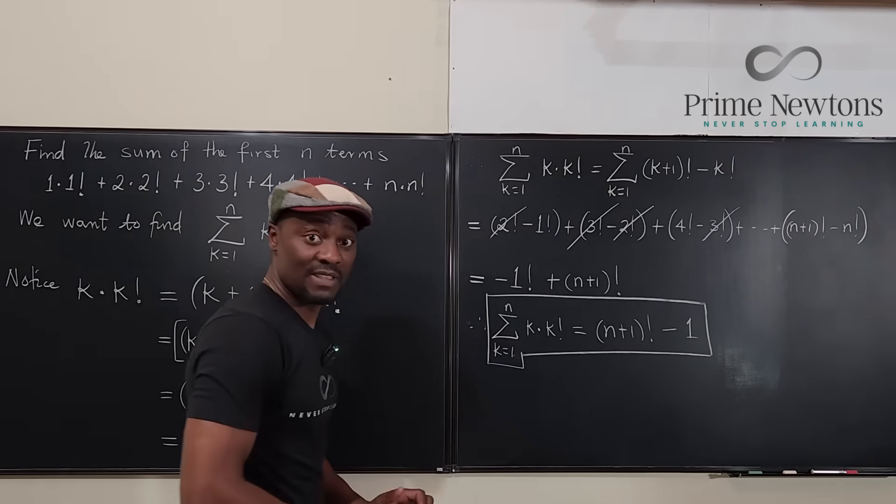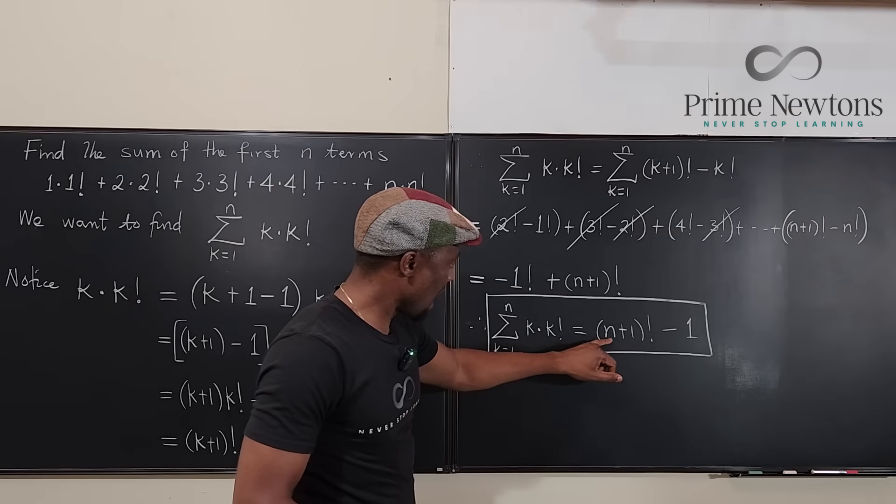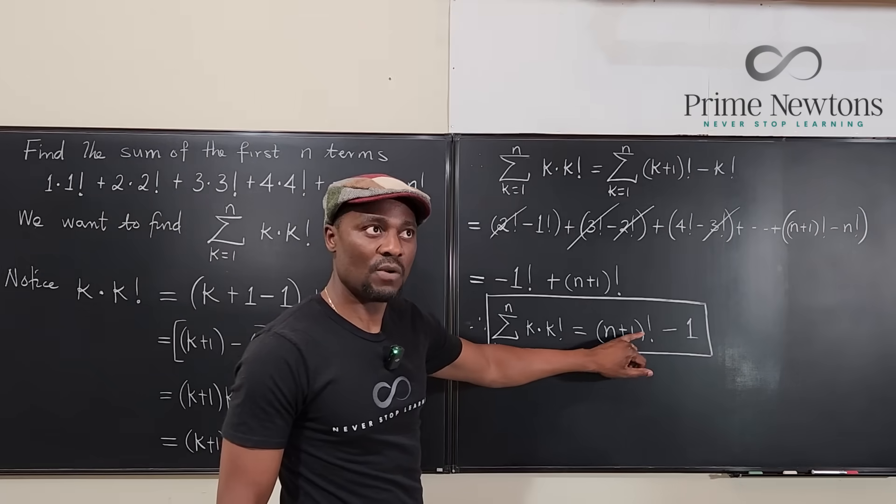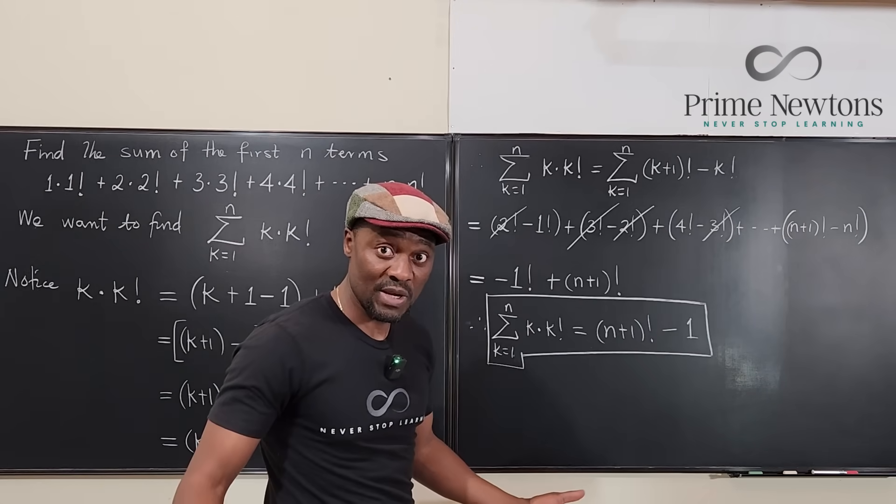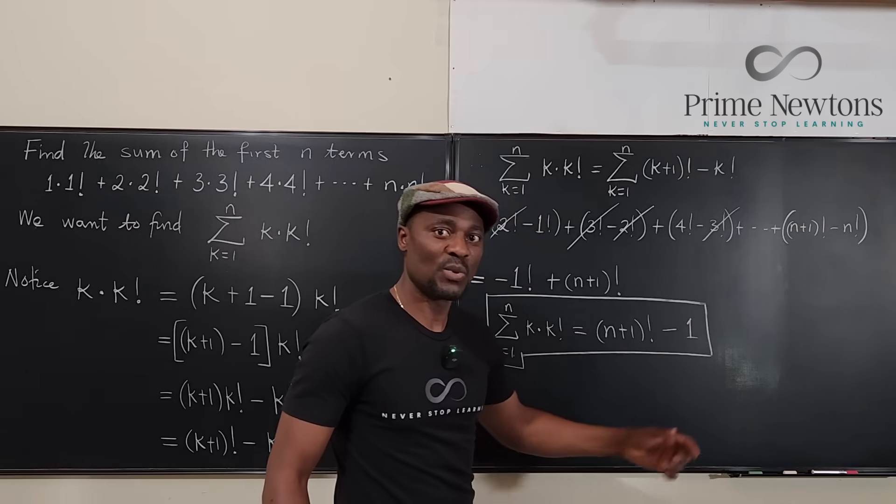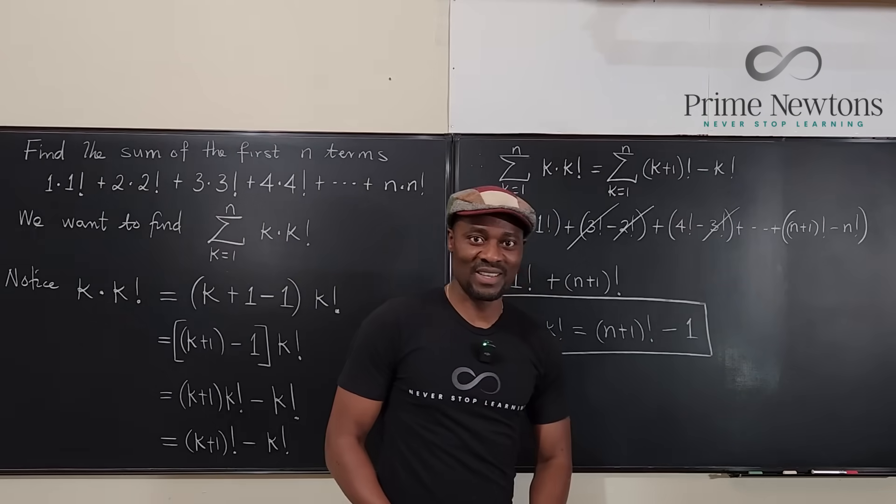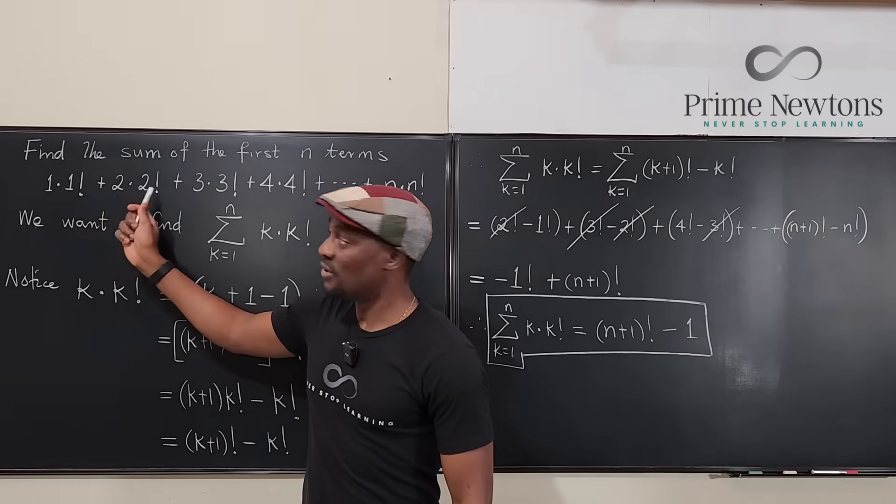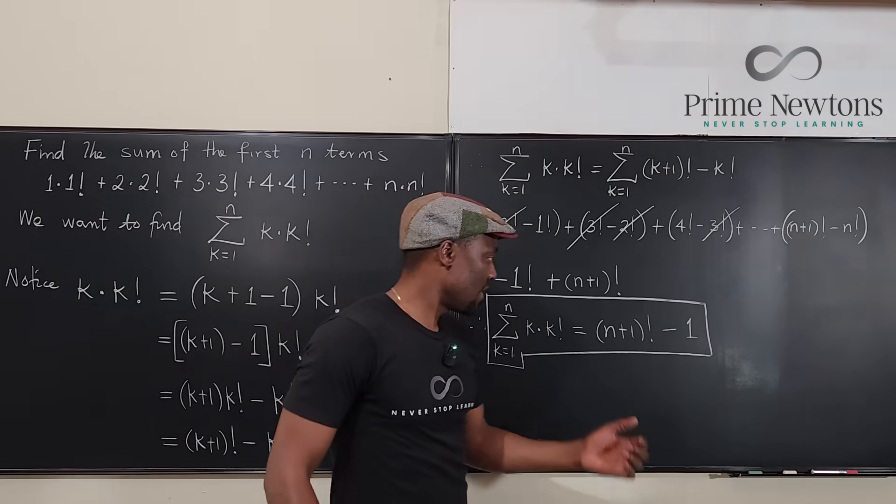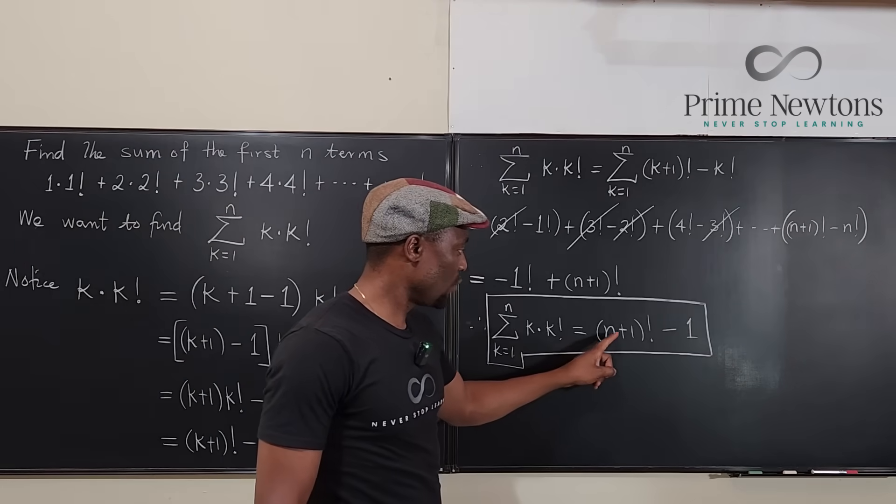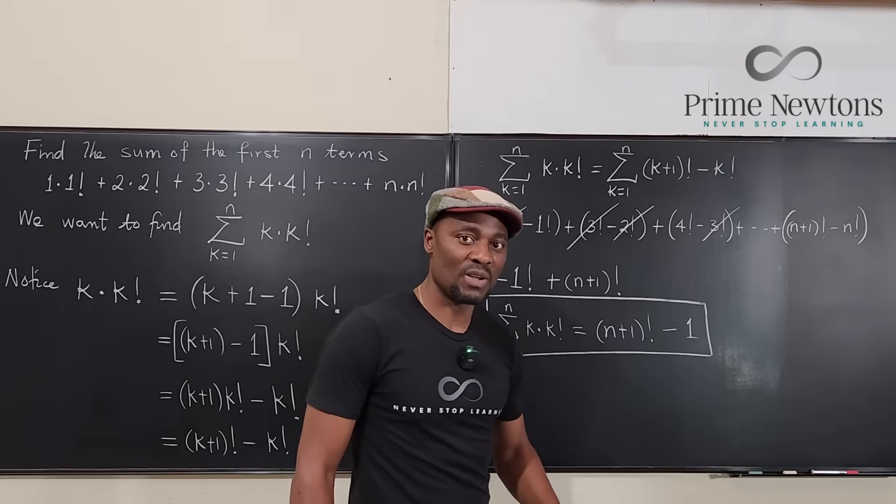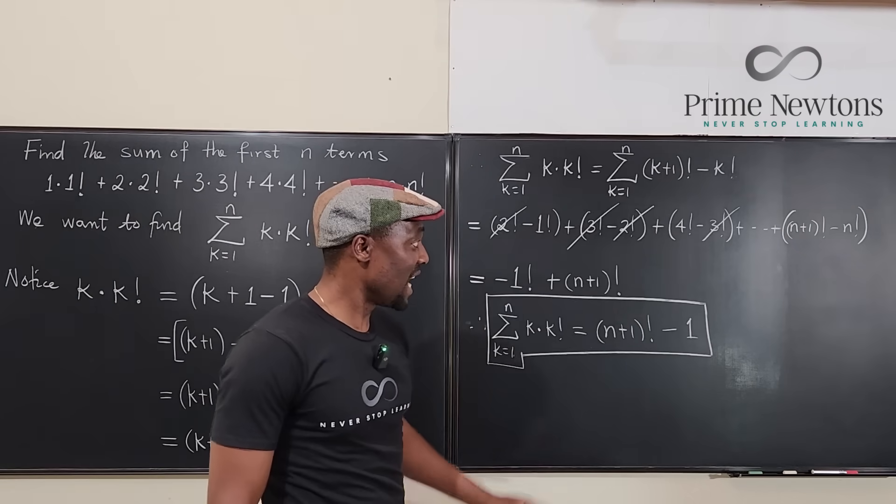Now we need to test and see if this is true. Let's say n equals three. What's three plus one? That's four. What is four factorial? Four factorial is 24. 24 minus one is 23. So this formula works. If you take the first two, your n is going to be two. And the total you're supposed to get is five. Let's plug in two here. What is two plus one? That's three. What's three factorial? Six. What's six minus one? Five. So the formula works. And this is it.